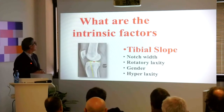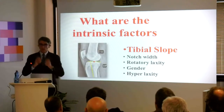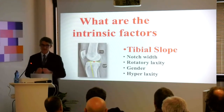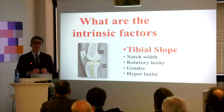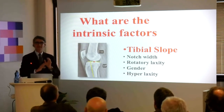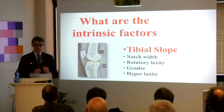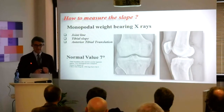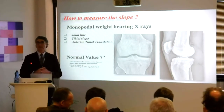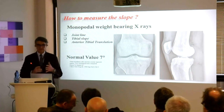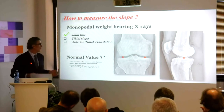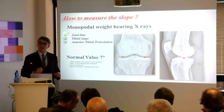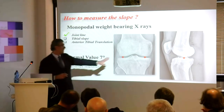What about the intrinsic factors and the tibial slope? If you can understand this, it's fantastic — it is so, so important. You will look at the X-rays, the monopodal weight-bearing X-rays: look at the joint line on the AP, and also on the sagittal weight-bearing view — it's like a Rosenberg view or Schuss view. Look at the joint line even on the lateral view, then measure the tibial slope.